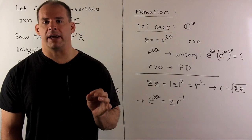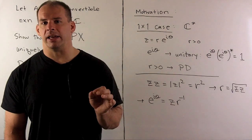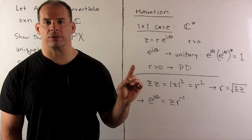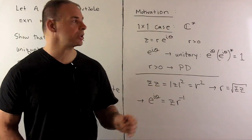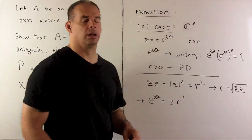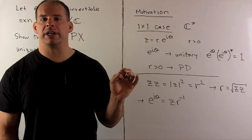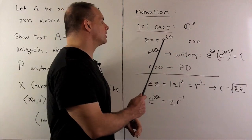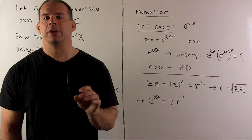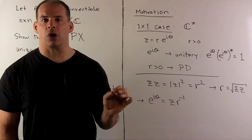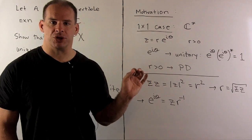To motivate how we proceed, we look at the 1-by-1 case — that is, the invertible 1-by-1 matrices over C, or C-star, the non-zero complex numbers. If we take a non-zero z, we can write it via polar decomposition as r times e to the i-theta, where r is a positive real number and e to the i-theta is on the unit circle. That exhibits the decomposition we're looking for.